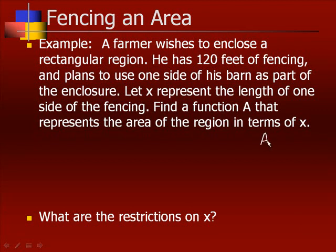Remember area is equal to length times the width. At this point we have area in terms of two variables, L and W. So they are saying let X be one of the sides of the fence. If we use the barn as one side, and if we call this side X, then this side is also X.